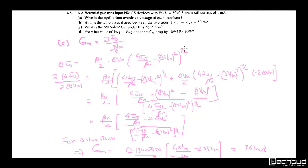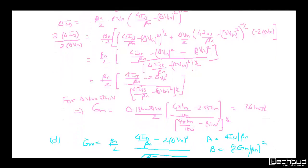After differentiation, taking β/2 as common, we get: gm = (β/2)[sqrt(4*ISS/β - δVin²) - δVin²/sqrt(4*ISS/β - δVin²)]. Simplifying: gm = (β/2)[(4*ISS/β - 2*δVin²)/sqrt(4*ISS/β - δVin²)].